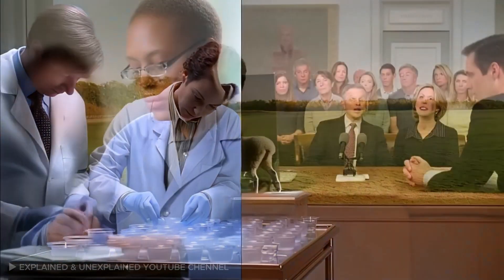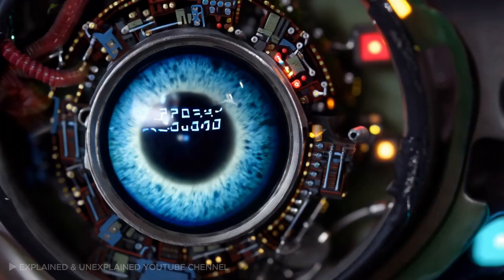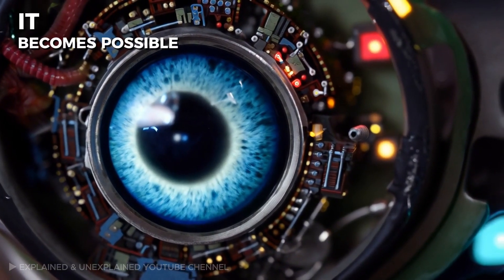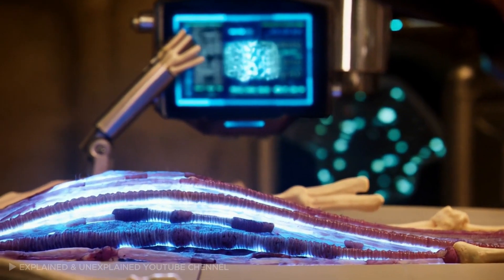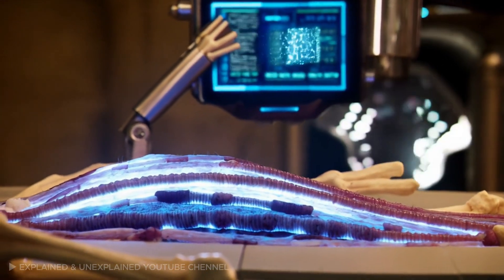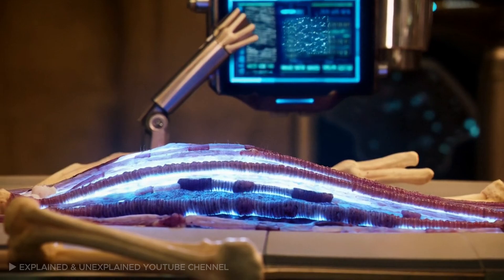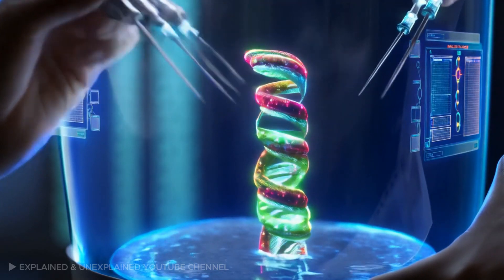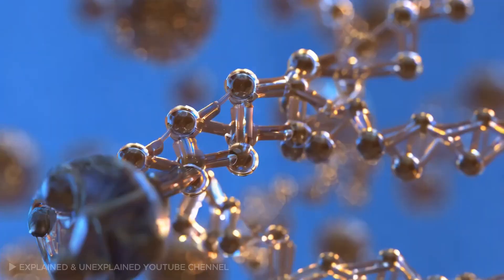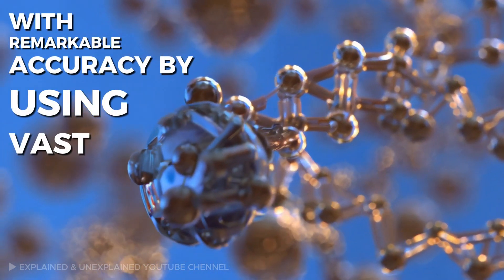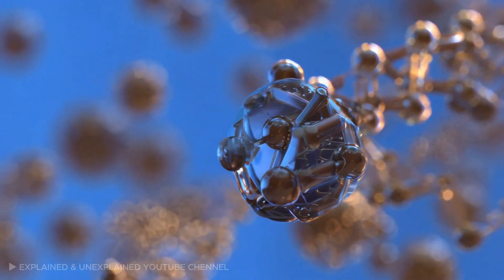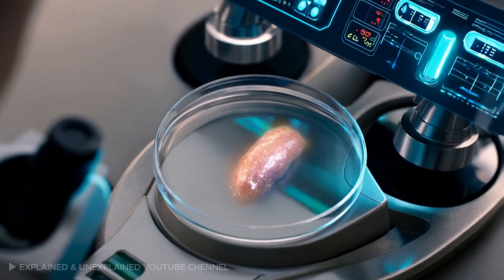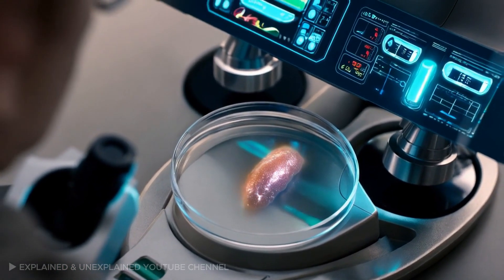Imagine a world where, through the analysis of the human genome using artificial intelligence, it becomes possible to not only clone a person but also create organs to save lives. This concept is not purely science fiction anymore. In fact, AI is already playing a crucial role in predicting genetic mutations with remarkable accuracy. By using vast datasets, AI can help scientists pinpoint genetic errors that may lead to diseases, allowing for early intervention and more effective treatments.